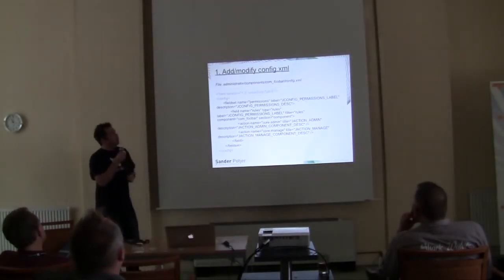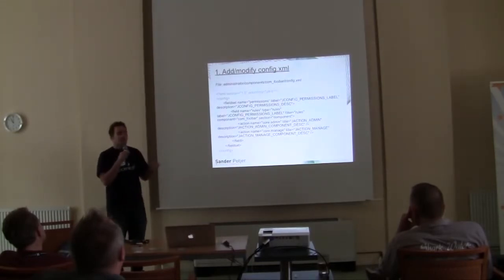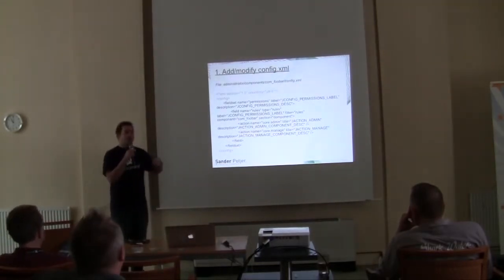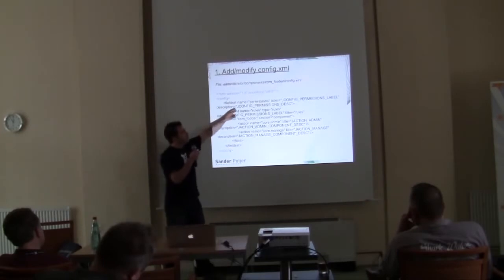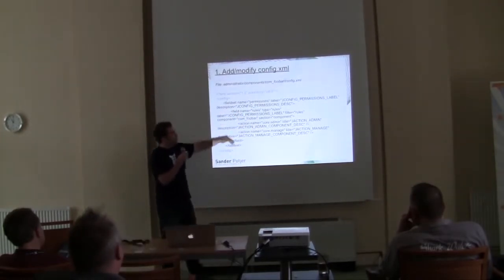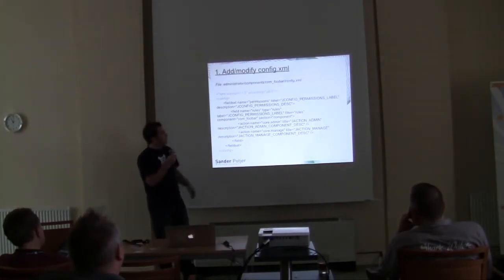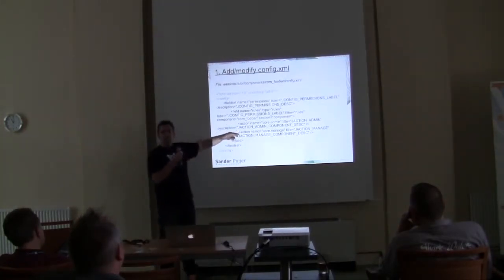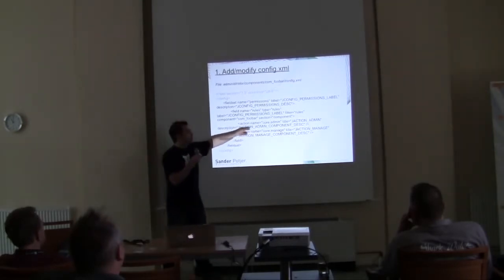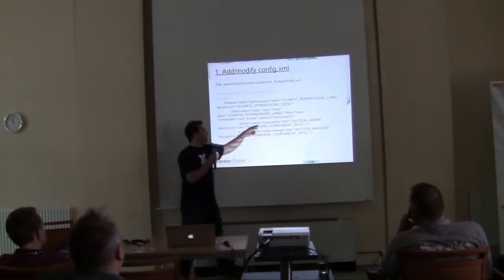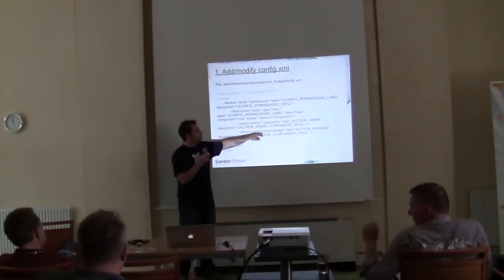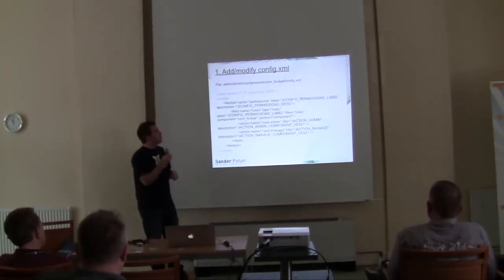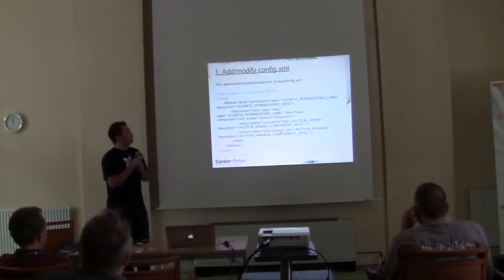Let's walk through the steps. First, you have to modify the config.xml. Normally there are also the kind of options stored, like how many articles are displayed on a specific page, but you can extend it with the field set for the permissions. You get this default base setup and you don't need to change anything in it. Here you see the two actions that are basically needed: core.admin with the title and a translatable description, and core.manage — who's able to access the component.